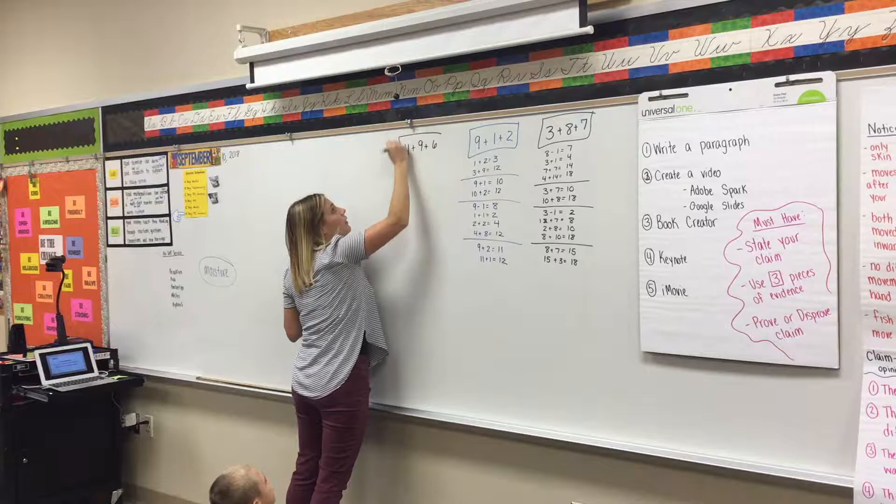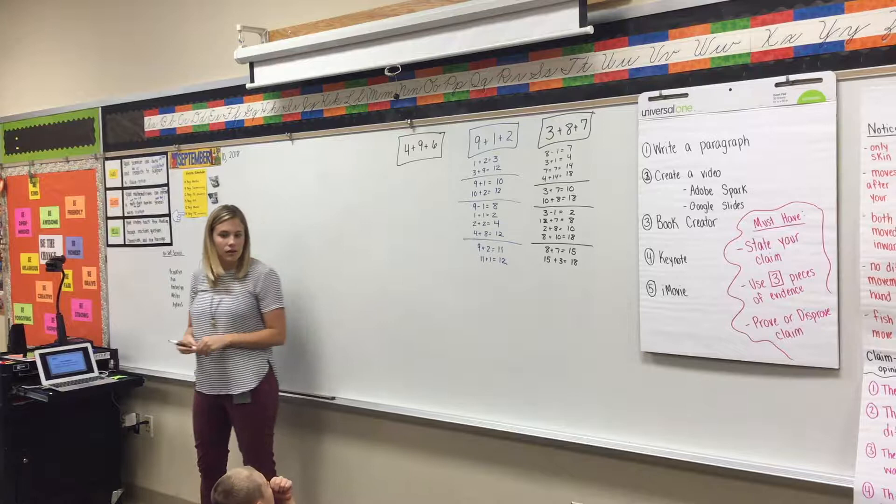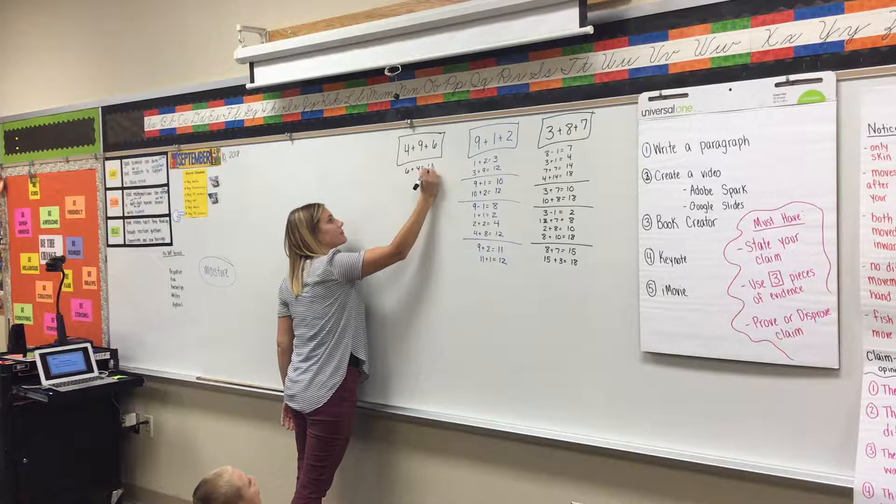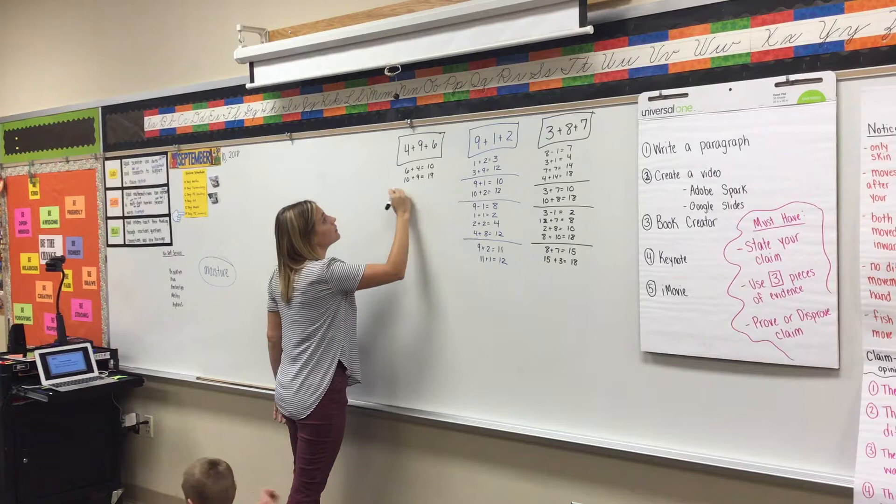Would love to hear from someone I haven't heard from yet. Cole. 6 plus 4 equals 10, and 10 plus 9 equals 19. Oh, I like how Brooklyn's agreeing with you. Awesome. Nice job, bud.